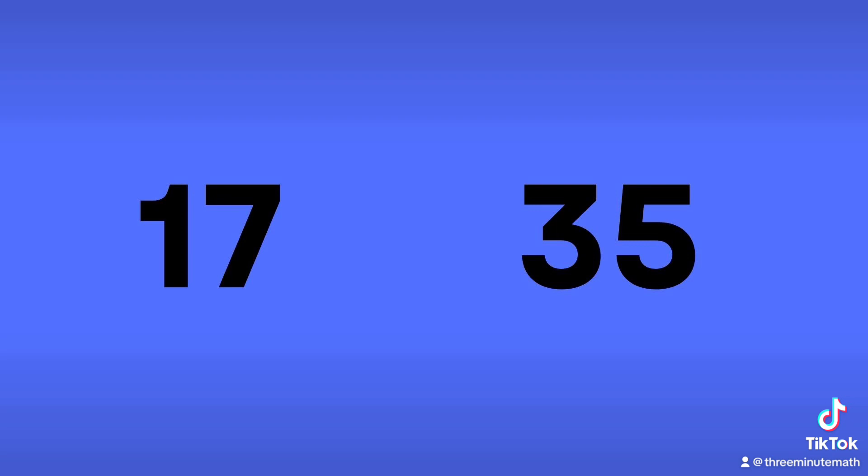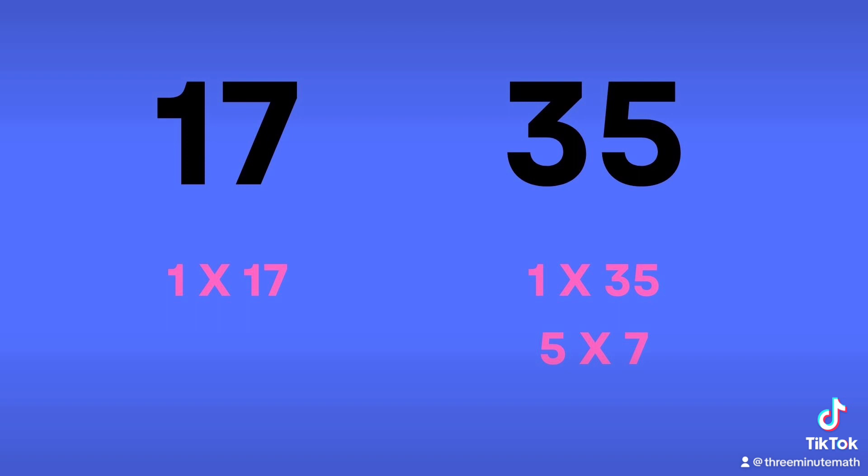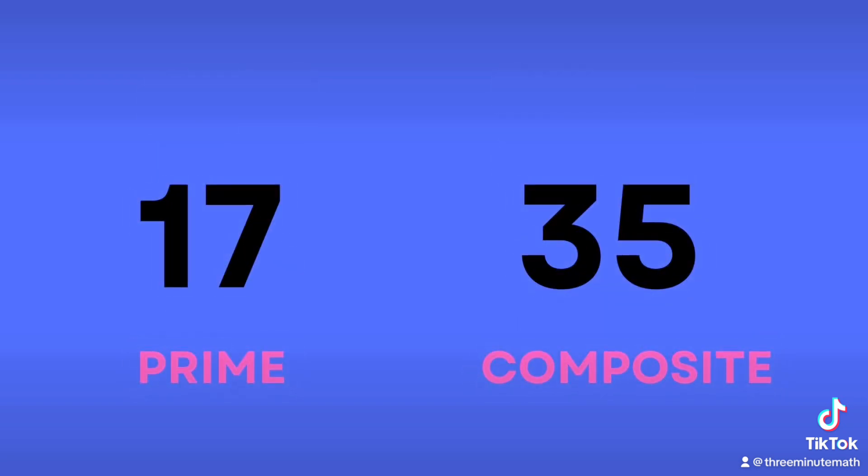Let's look at 17 and 35. The only way to get 17 is 1 times 17, but 35 we can get with 1 times 35 and 5 times 7. Therefore, 17 is prime, 35 is composite.